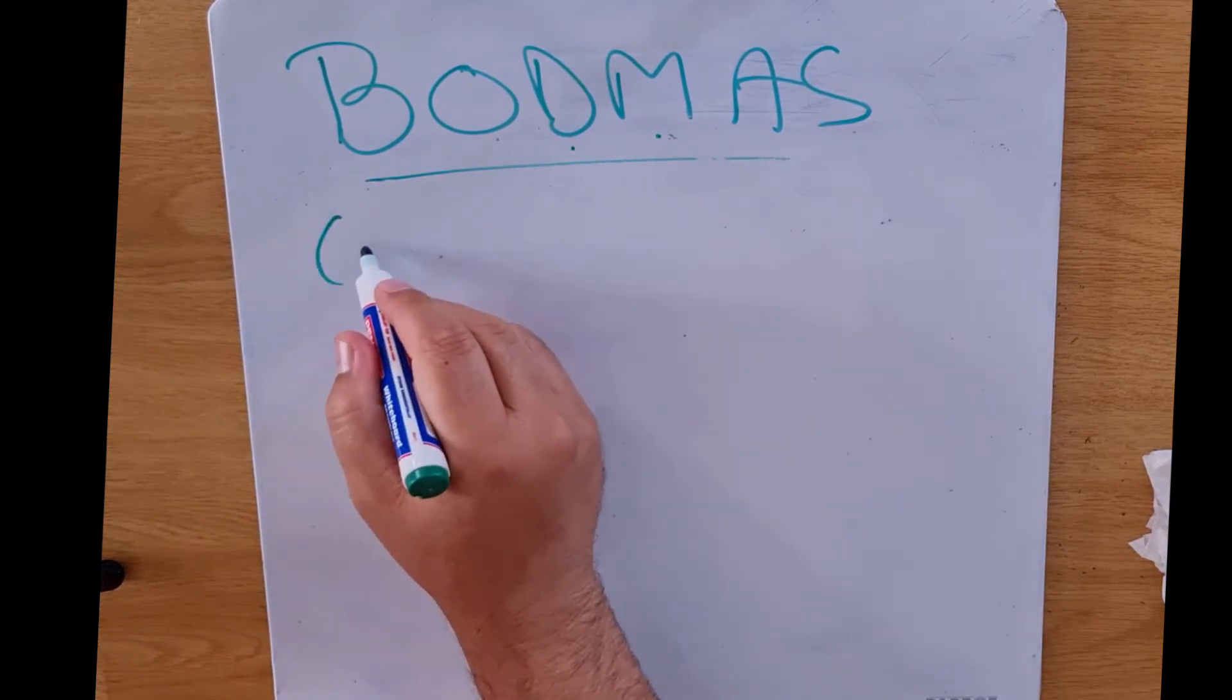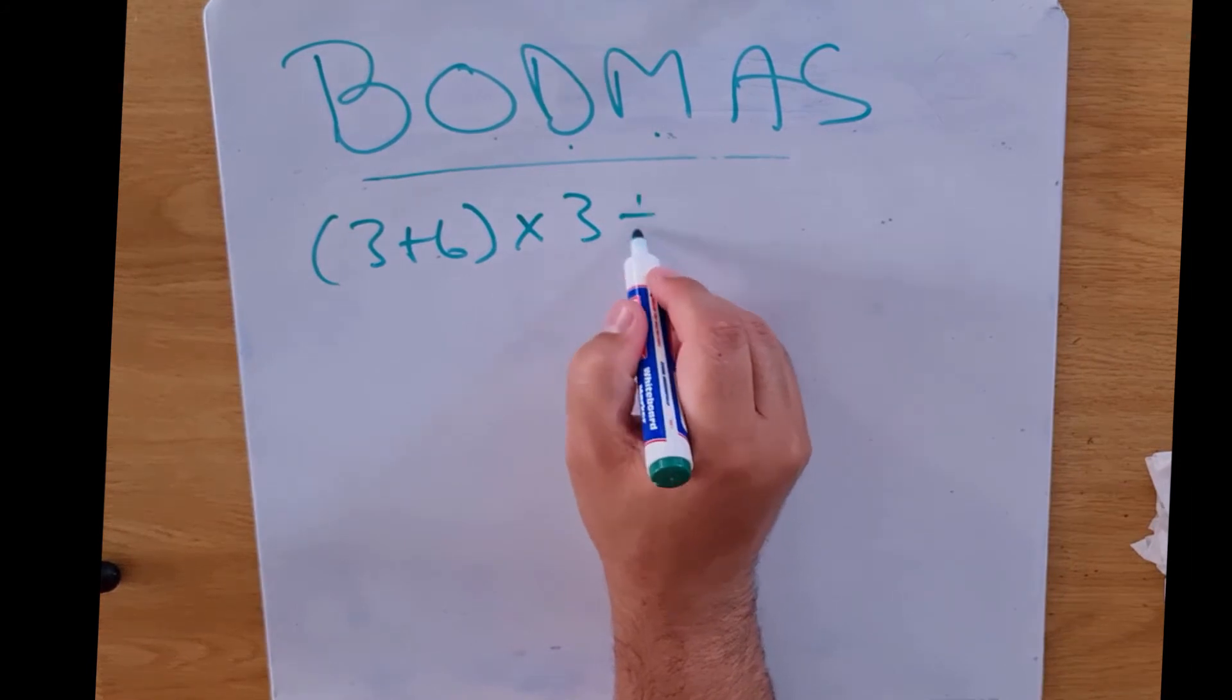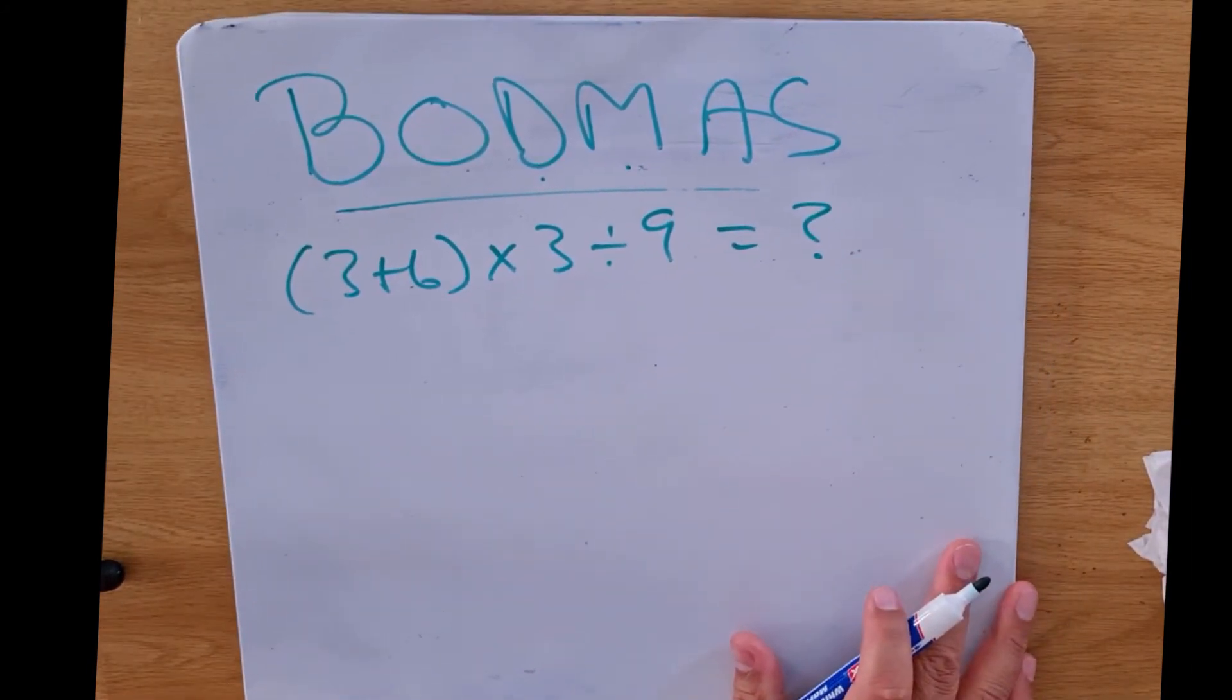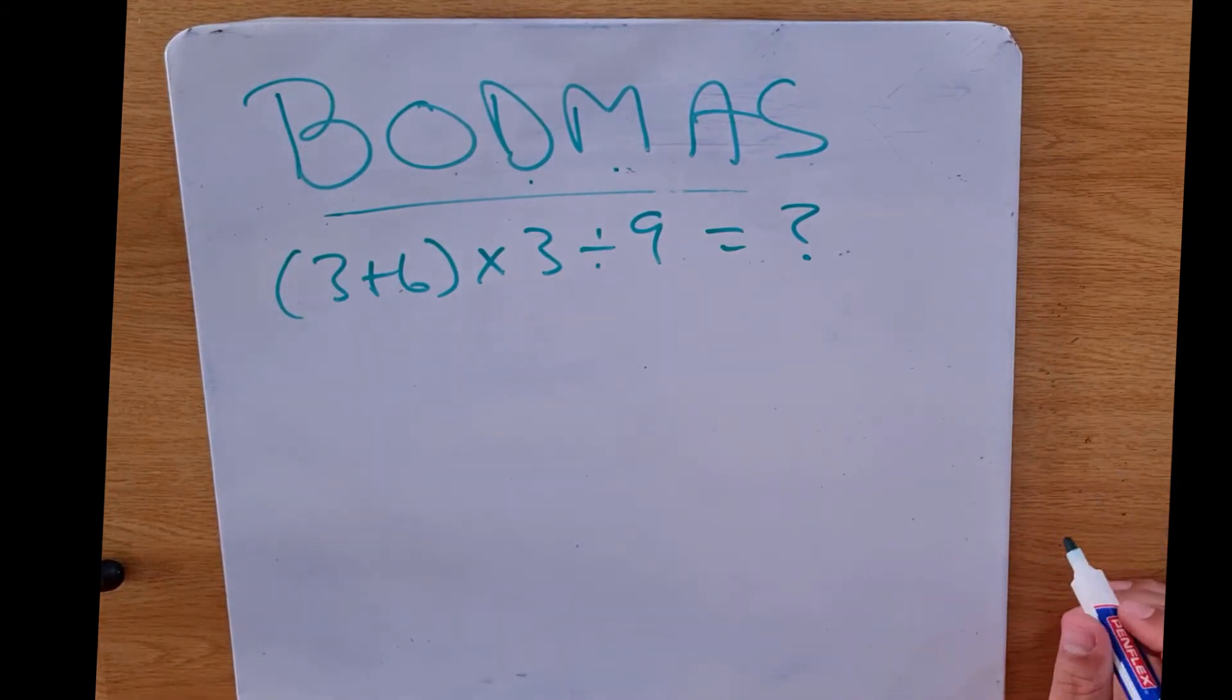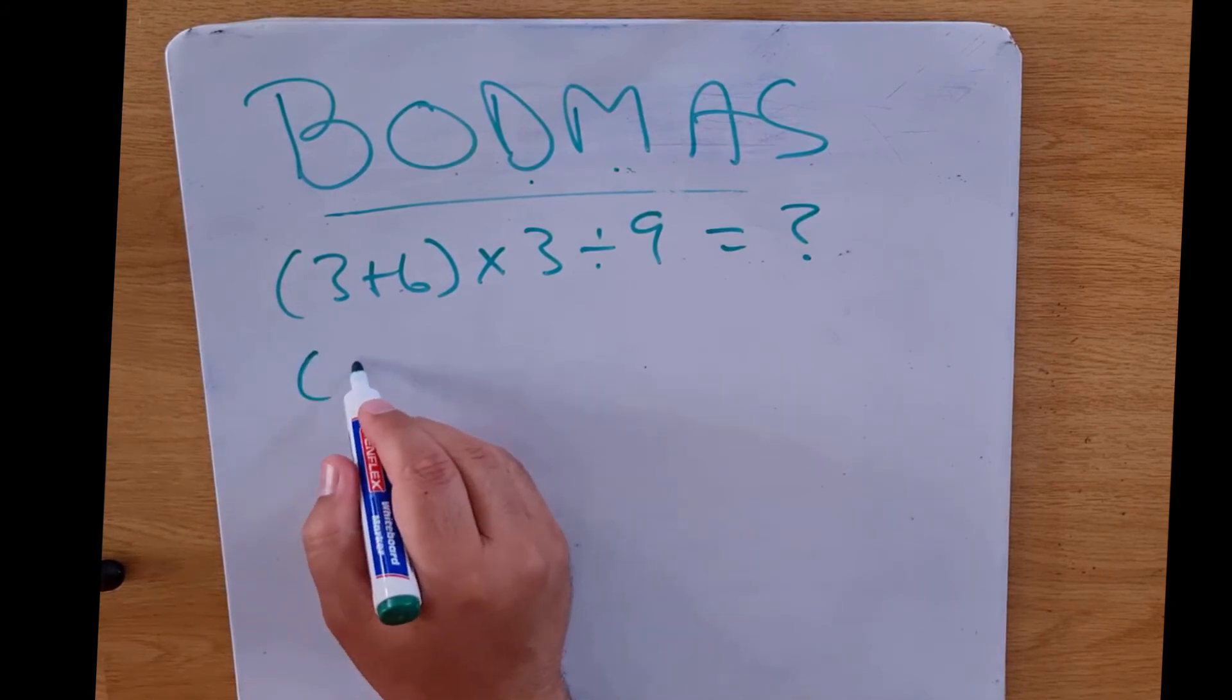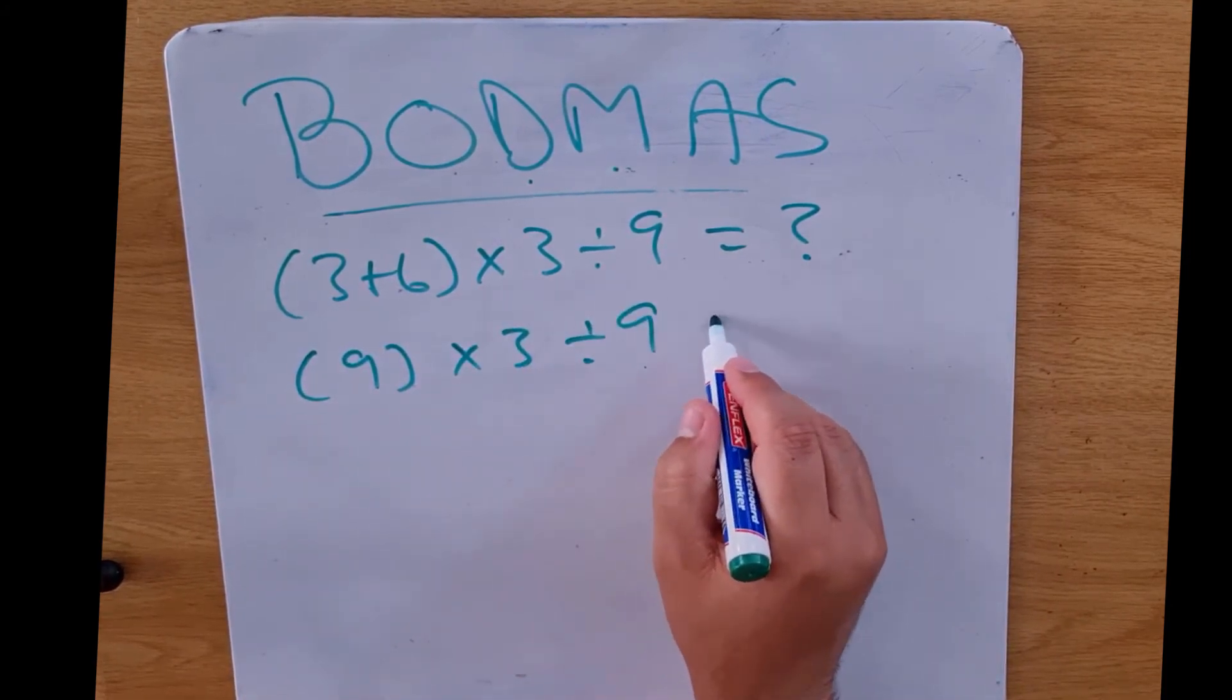Let's look at another one: 3 plus 6 multiplied by 3 divided by 9 equals, we're going to find out. From left to right, what do we have first? We've got our brackets, so that becomes 9 times 3 divided by 9.